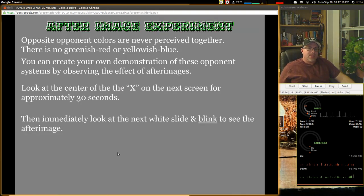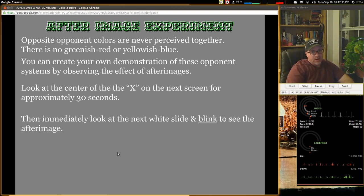Let's look at some after image experiments. And what I'm going to do with this is read through them pretty quickly. But if you want to look at this yourself and pause it and just experience this, some of these experiments would help you understand how the brain processes vision and color and why we're able to trick the brain because we're playing the processes against each other. So let's check it out. Opposite opponent colors are never perceived together. Remember, that's the opponent process theory. So you can create your own demonstration for these opponent systems by observing the effect of what's called after images.